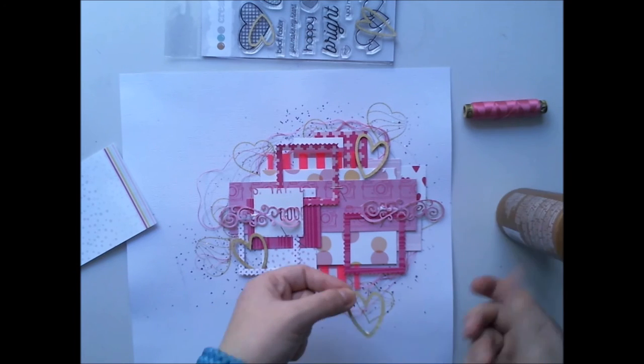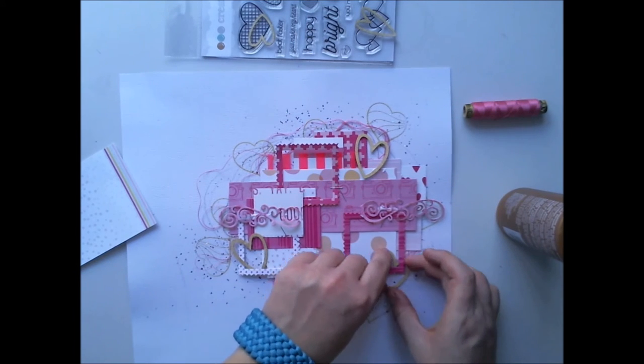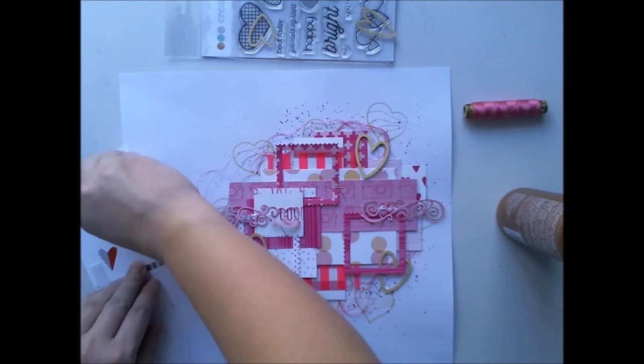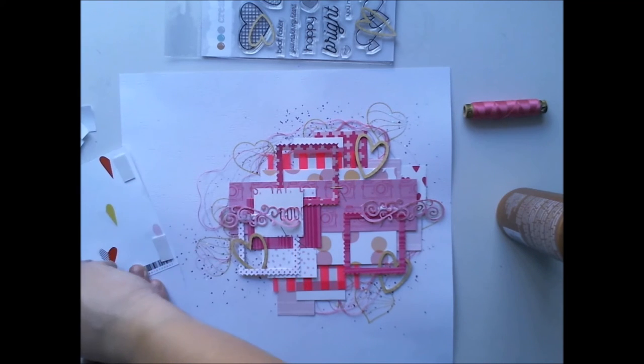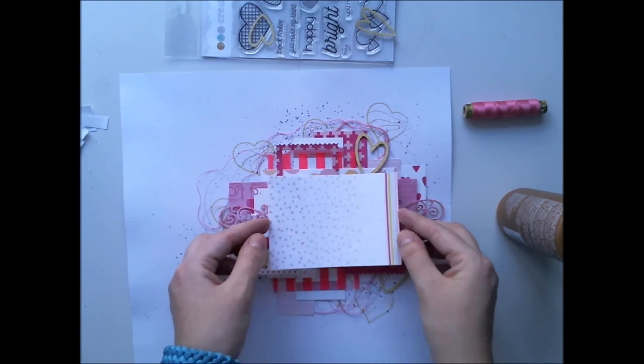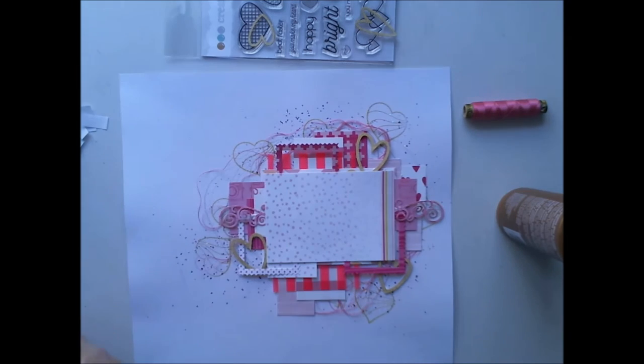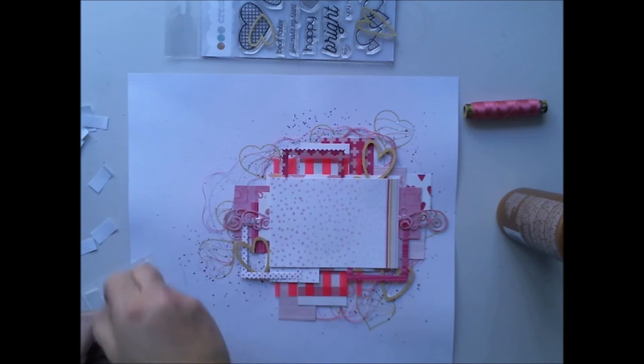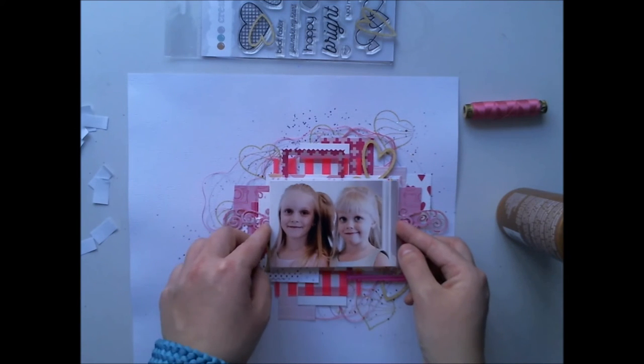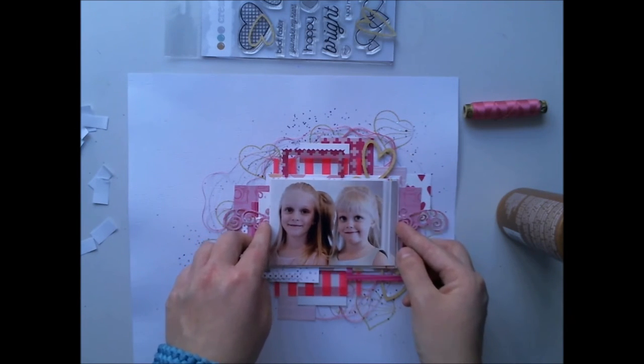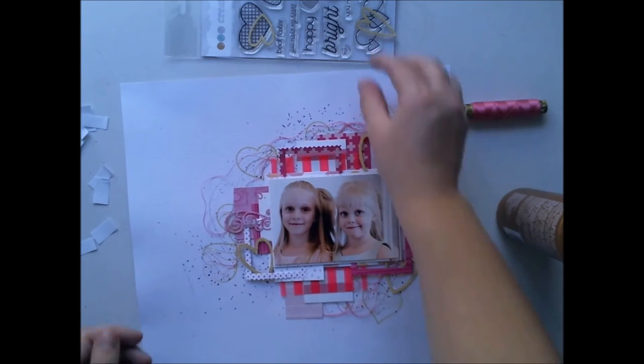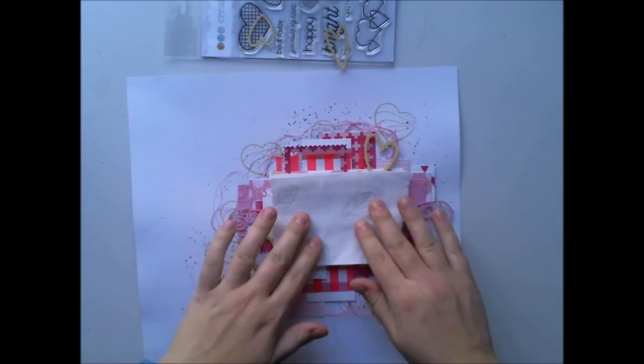So I'm adding these hearts between the papers. I don't want them to be all on top because it gives more dimension to add them here and there. And with these 3D foams I'm adding my photograph. There's my sweet little darlings smiling beautifully.